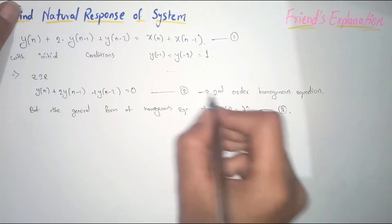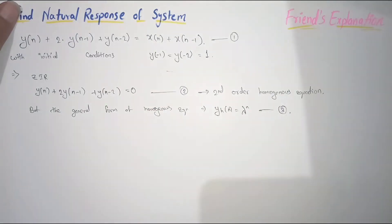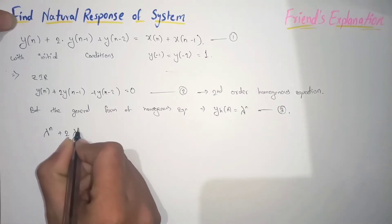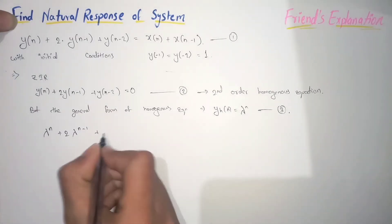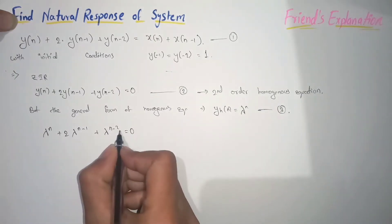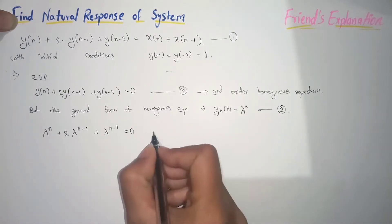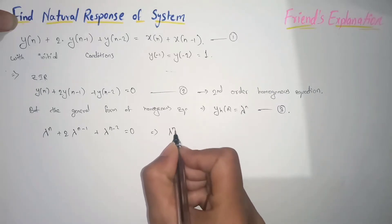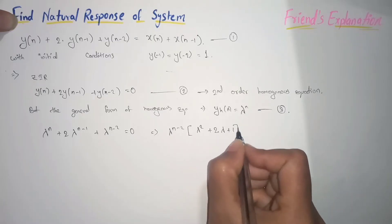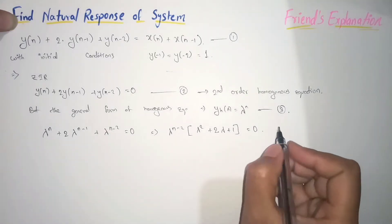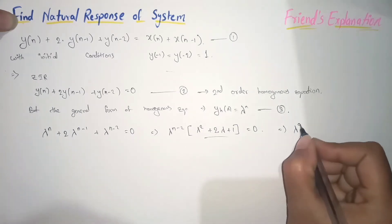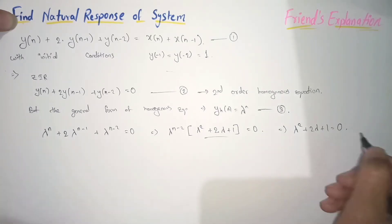Now what we will do is substitute equation 3 into equation 2. We will get: lambda^n + 2·lambda^(n-1) + lambda^(n-2) = 0. Taking lambda^(n-2) as common, we get: lambda^2 + 2·lambda + 1 = 0. So the characteristic equation is lambda^2 + 2·lambda + 1 = 0.